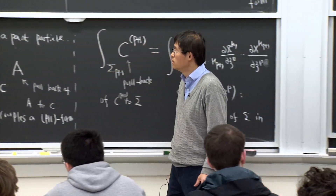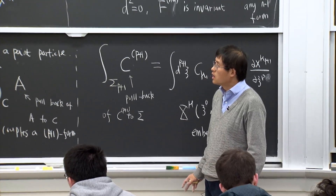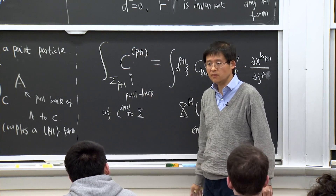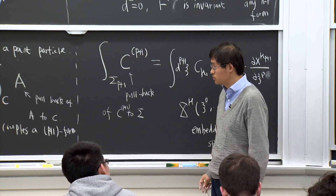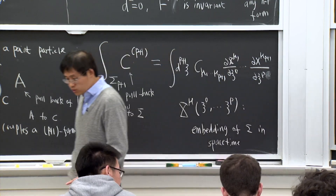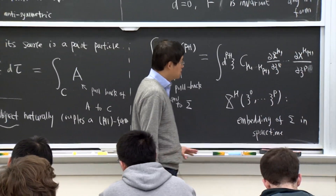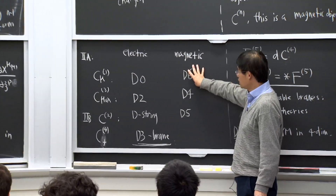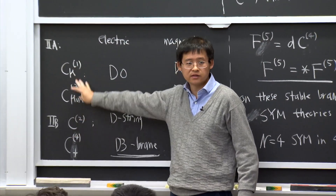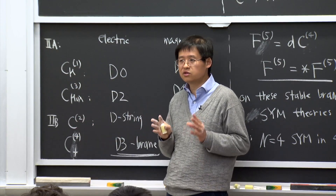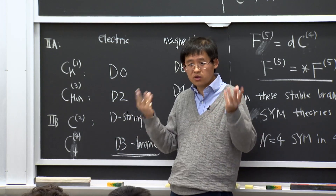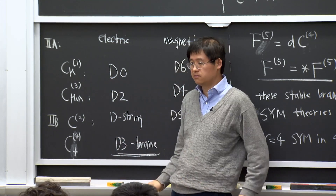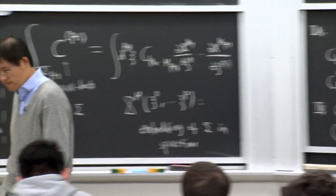Let us now conclude our discussion of D-branes from the Dirichlet boundary condition perspective, and take a different perspective: viewing D-branes as objects — solitons — charged under the generalized gauge fields. We want to elaborate on this perspective.